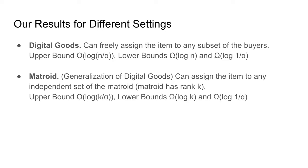One generalization of digital goods is the matroid setting, where we're allowed to assign freely to any independent set of a particular matroid. We show that all the bounds generalize naturally: every n previously gets replaced by a k, where k is the rank of the matroid.